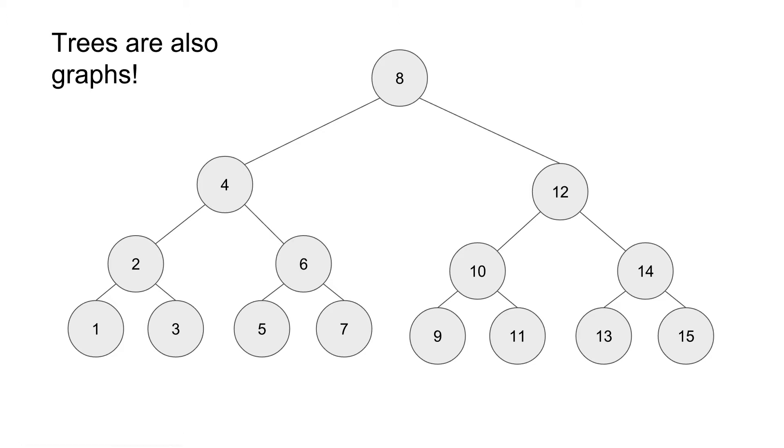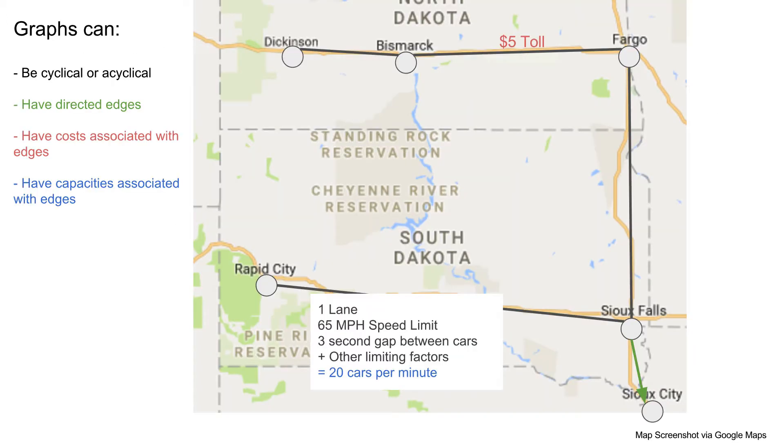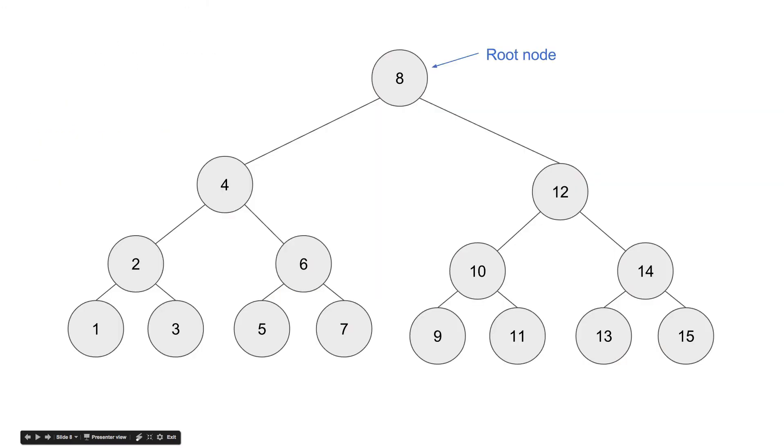So the first thing that makes a tree easier to deal with is that it has a root node. In other graphs, for example, if I go back to the map, there's no specific city you have to start at, so any algorithm we work with has to keep in mind that you can start anywhere and you might be going anywhere. But when you get to a tree, you've got this root node, and that's pretty much where you're always going to start. You're going to start at this root and work your way down the tree.